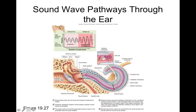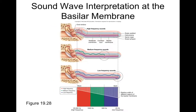From the cochlear nucleus, axons connect to the superior olivary nuclei and inferior colliculi of the midbrain — involved in auditory reflex and sound localization. These connect to the thalamus, whereby axons send information to the temporal lobe and connect to the primary auditory cortex, where you can become conscious of a particular sound.